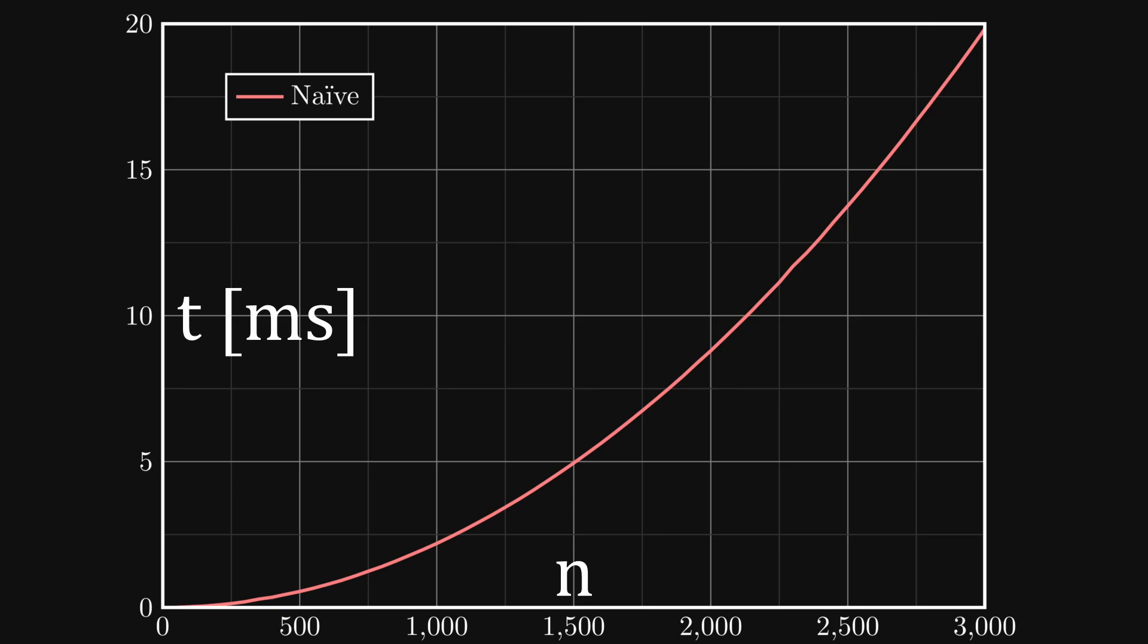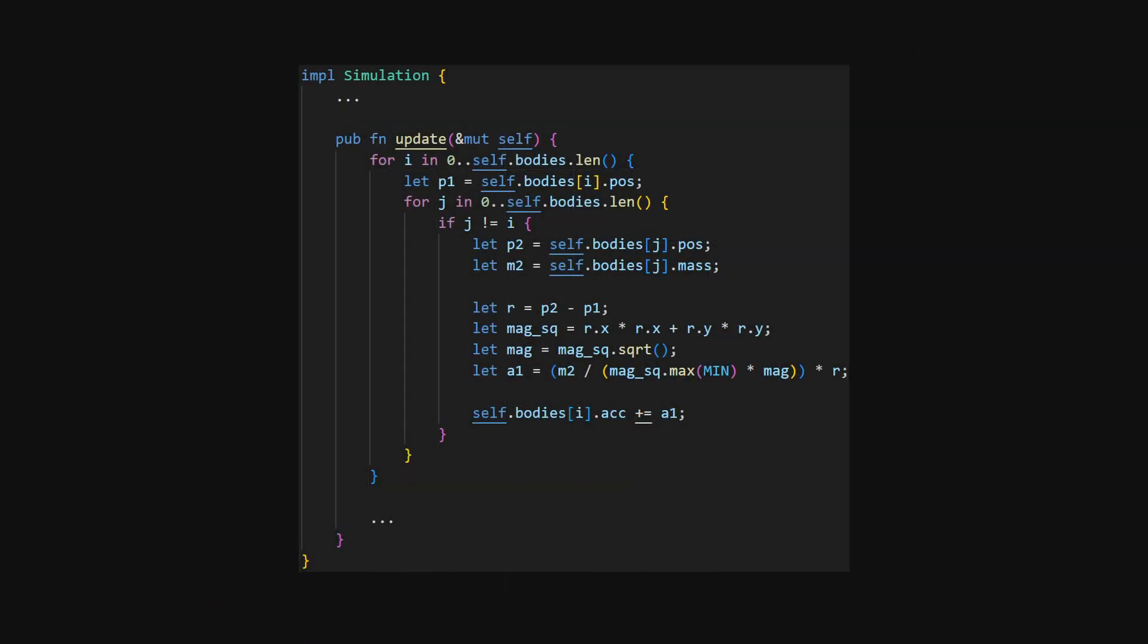I won't go into how to remove this quadratic relationship in this video, but we can still cut the time per update in half with one simple trick. To begin, we need to identify the problem. And all you really need to know is that the calculation of acceleration is what's taking up the majority of the time.